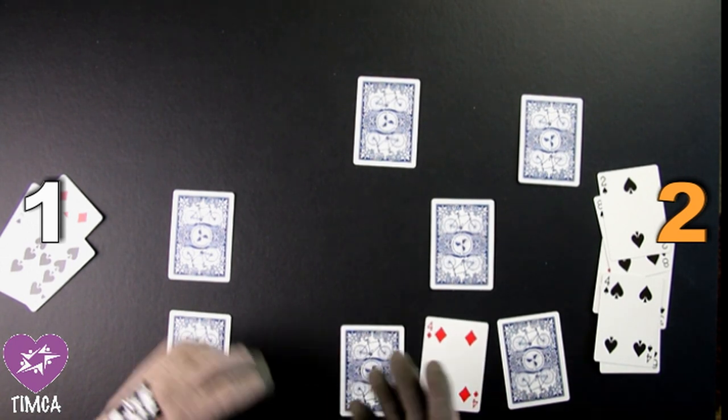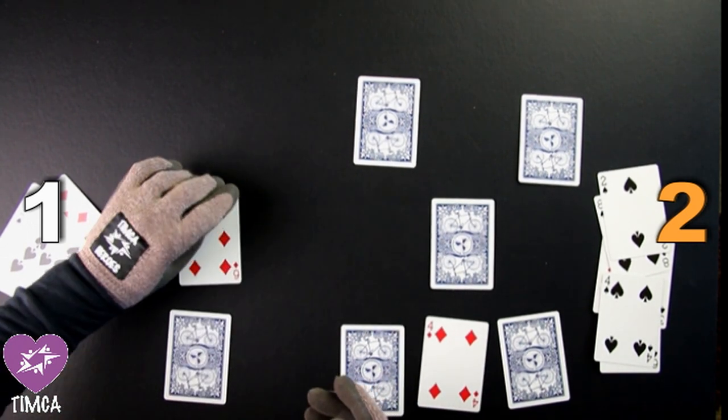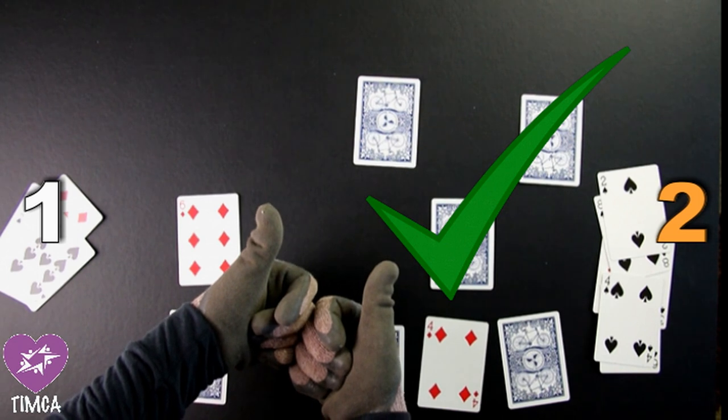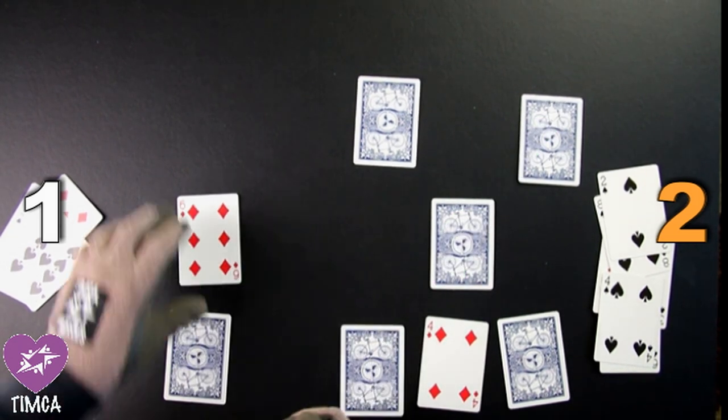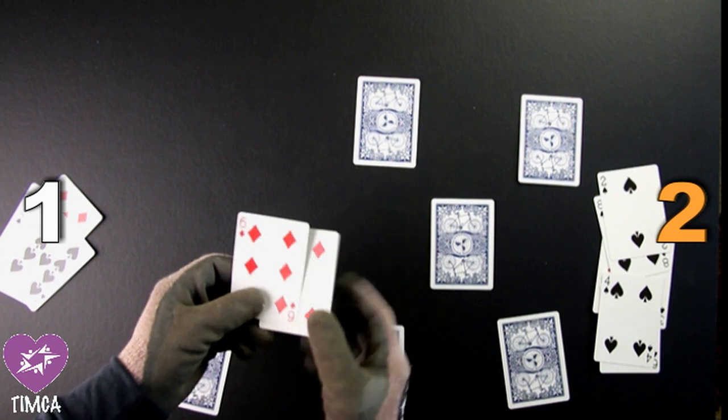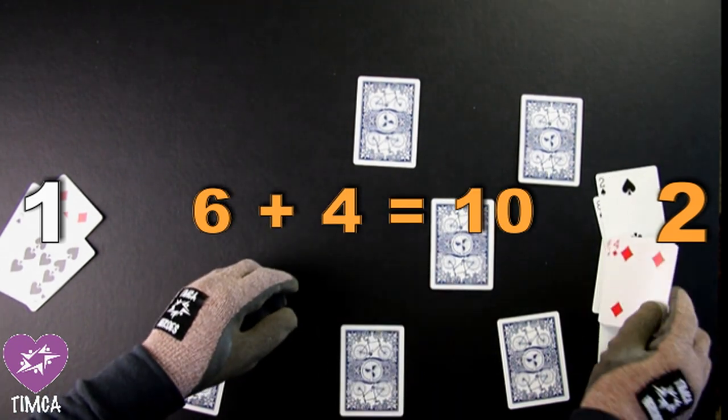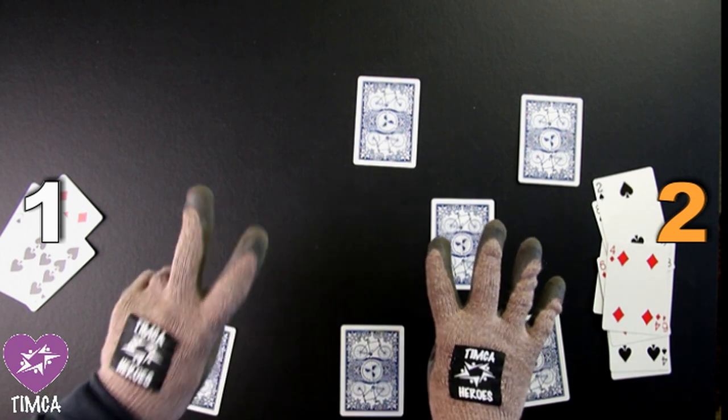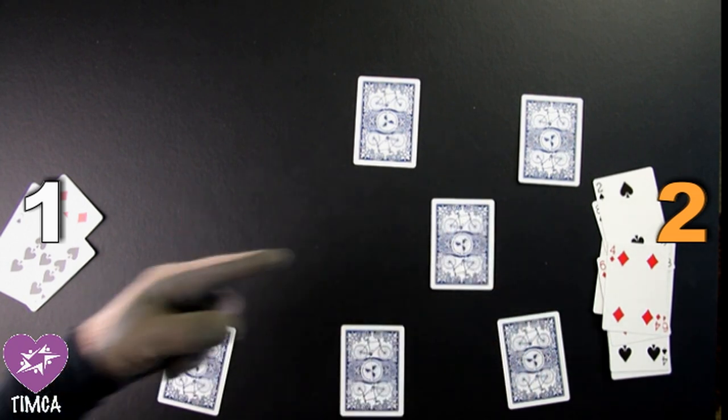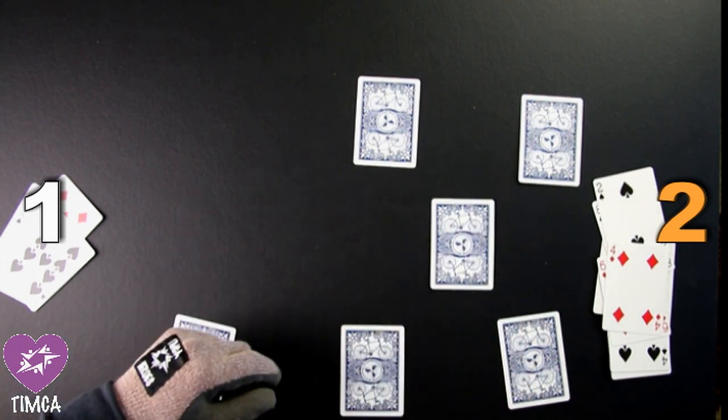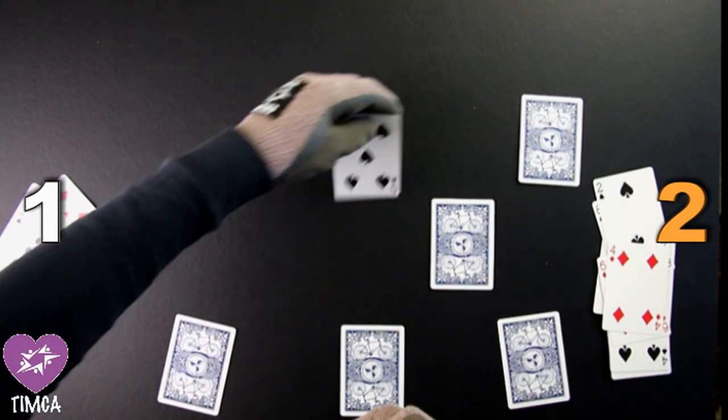Learner 2 can now play again. Learner 2 selects a 4. Can they find a 6? Yes, they can. Well done, Learner 2. As we know, 6 plus 4 is equal to 10. So, they can set aside that pair as well and now lead by 4 points to 2. Learner 2 now has another turn. Can they extend their lead?